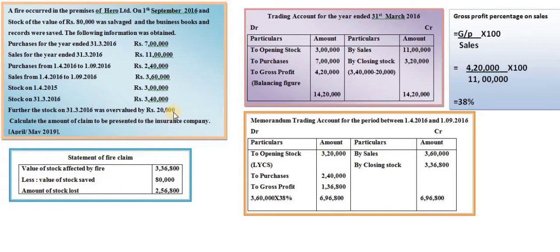Further, the stock on 31st March 2016 was overvalued by 20,000. This is one of the new adjustments we can see in this problem. We need to calculate the amount of claim to be presented to the insurance company. We have to prepare the trading account for the interior period and the memorandum trading account up to the date of fire.